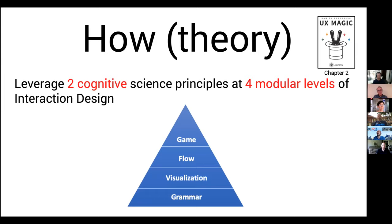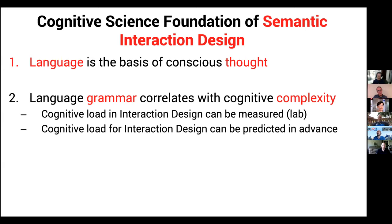There are two cognitive science principles that I will talk about, and they work at four modular levels of interaction, similar to Foley's work in the 90s, but where flow and visualization are separate layers. I've introduced grammar below, and the optional use of gaming theory above. The science reduces to two statements for presentation purposes. The first is that language is the basis of human conscious thought. Whenever you have to solve a problem, you solve it in a natural language — usually your mother tongue. It's not that language is the basis of all conscious thought; we have the fight-and-flight mechanism in the primitive lizard brain. But if it's problem-solving, it's going to be managed intellectually in the frontal cortex through the use of language.